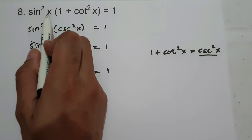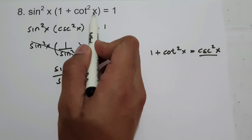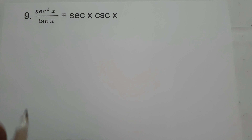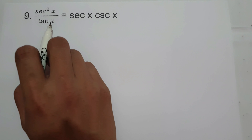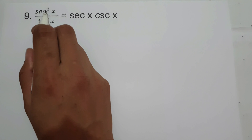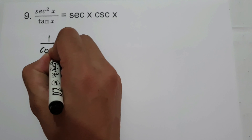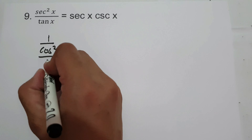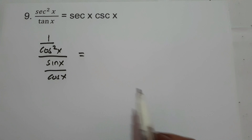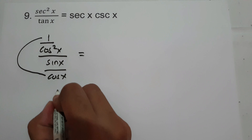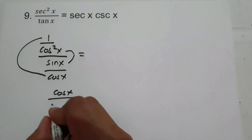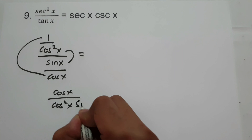Therefore, sine squared x times the quantity of 1 plus cotangent squared x equals 1. On example number 9, we have secant squared x over tangent x equals secant x times cosecant x. So to prove this one, let us change secant squared x as 1 over cosine squared x, and let us have tangent x as sine x over cosine x. Then let us simplify: 1 multiplied by cosine x is cosine x, over cosine squared x times sine x.